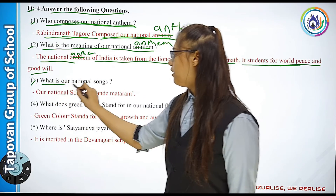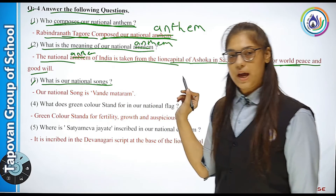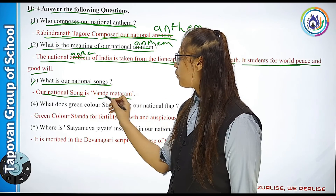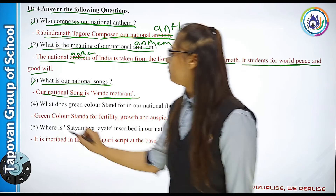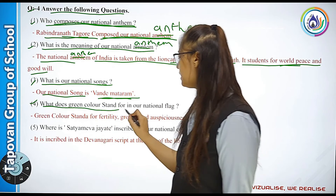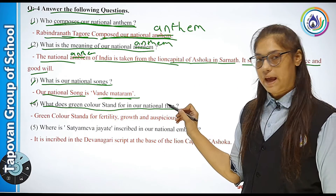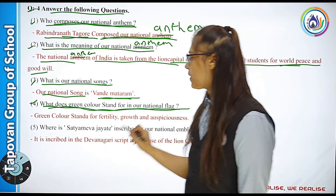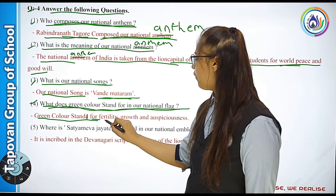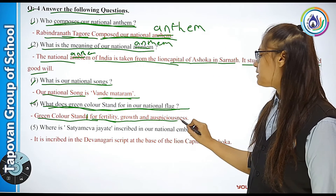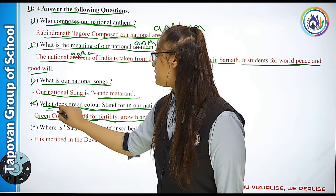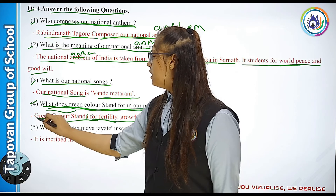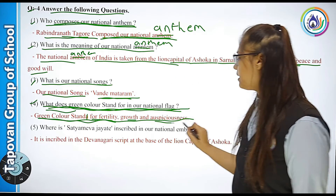Third: What is our national song? Our national song is Vande Mataram. Fourth: What does the green color stand for in our national flag? Green color stands for fertility, growth and sustenance.